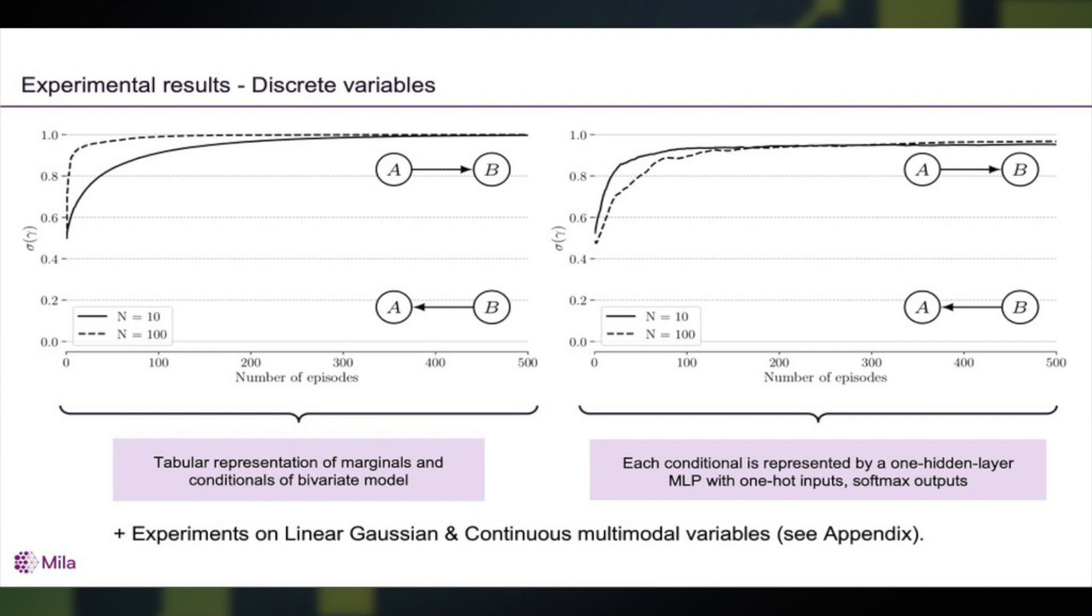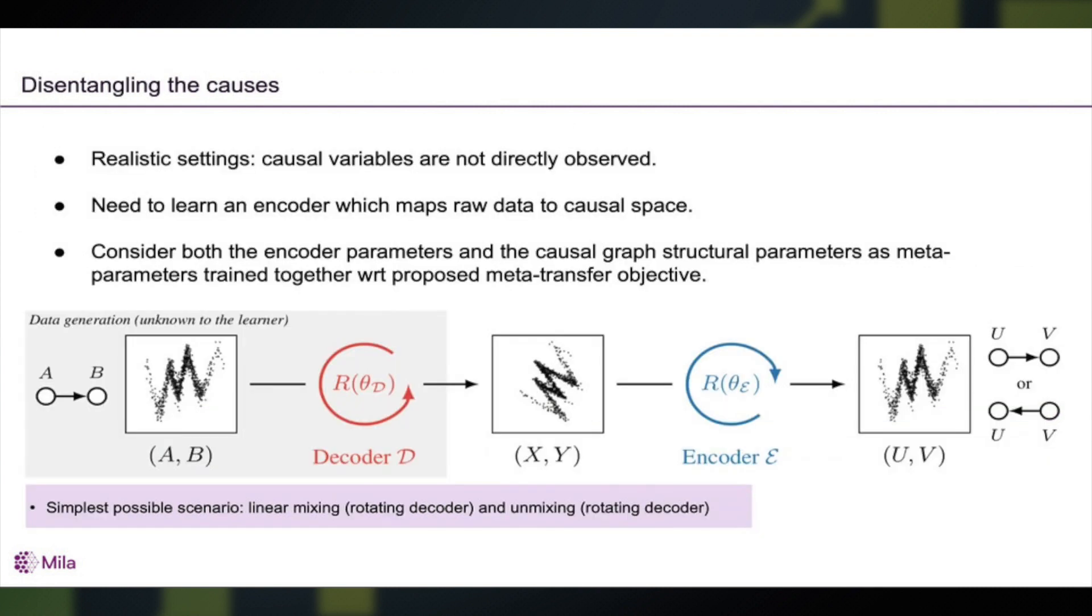Now the last aspect of our work tries to generalize this a little bit by looking at the more realistic scenario where we don't actually observe the causal variables. Think of the causal variables as abstract quantities A and B, but what we observe are X and Y, which are a function of A and B. Maybe you can think of X and Y as pixels. It doesn't make much sense to think of pixels causing other pixels, but it does make sense to think of eating causing the end of hunger.